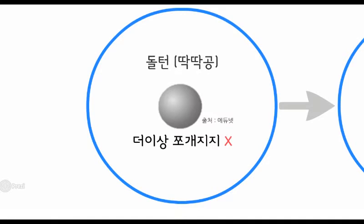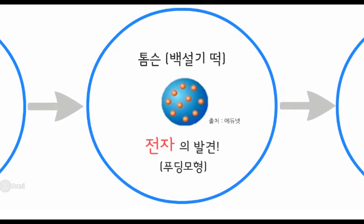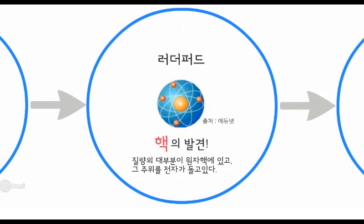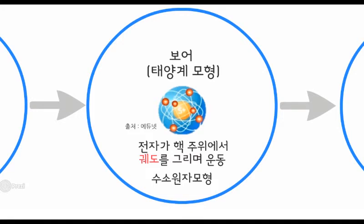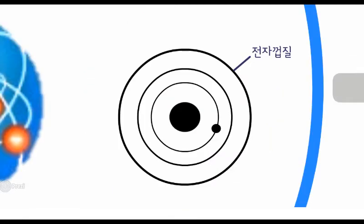아주 옛날 과학자들은 이 원자를 더 이상 쪼개지지 않는 입자로 생각했어요. 핵도 전자도 전제하지 않는 딱딱한 공 같은 형태였죠. 시간이 흘러 톰슨이 전자를 발견하게 되었고 전자가 촘촘히 박혀있는 푸딩 모형이라 이름을 붙였죠. 곧이어 원자의 질량 대부분이 밀집되어 있는 원자핵의 존재를 알게 되었고 그 주위를 전자가 무작위하게 돌고 있다는 가설을 내었습니다. 머지않아 수소원자의 관찰을 통해 전자가 핵 주위에서 궤도를 그리며 운동하고 있다는 사실을 알게 되었고 태양계 모형이라 이름을 붙였어요. 전자가 하나인 수소원자를 관찰했을 땐 정확하게 일치했습니다.